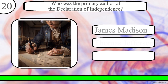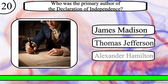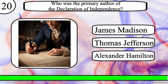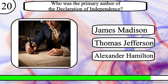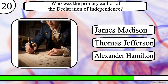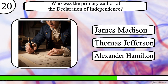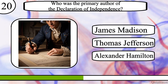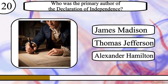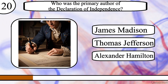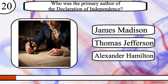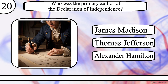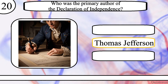Question 20. Who was the primary author of the Declaration of Independence? James Madison, Thomas Jefferson, or Alexander Hamilton? The correct answer is Thomas Jefferson.